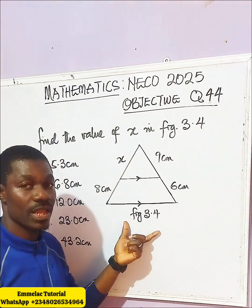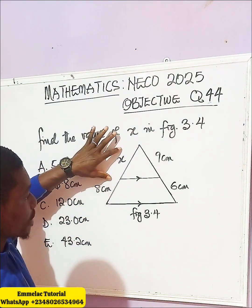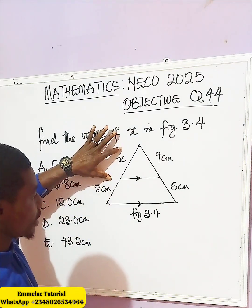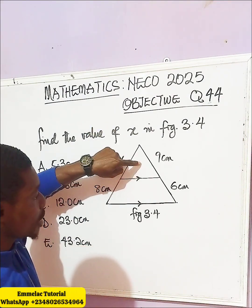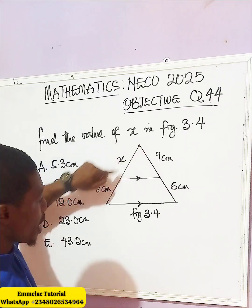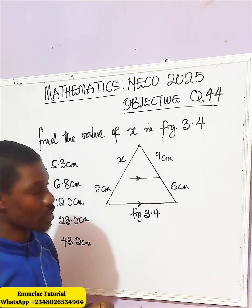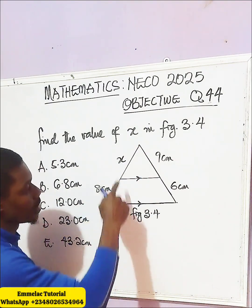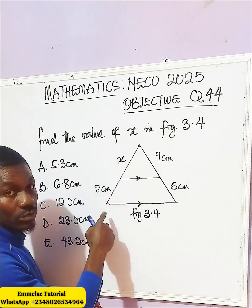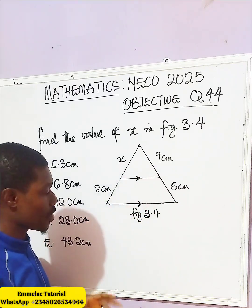Now in this figure, it represents a triangle — a smaller triangle and a bigger triangle. So we're looking at the proportion between the smaller angle and the bigger angle.